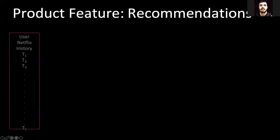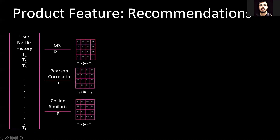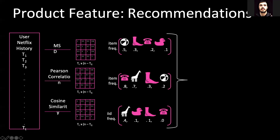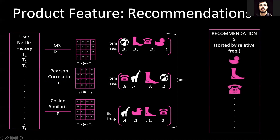Our second feature group is personalized recommendations for users, and it works as follows. Users can easily upload the titles they have already watched on Netflix. The engine then refers to three different similarity matrices, mapping the similarities across all movie titles in our repository. The model returns the most similar movie titles and their frequencies relative to the titles the user already watched. Lastly, only the mutually shared similar titles are recommended to the user.